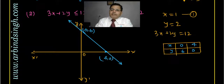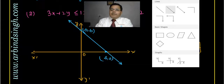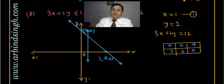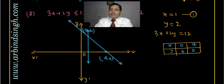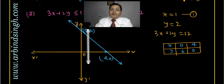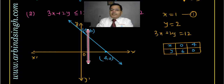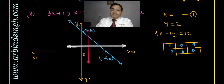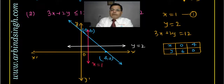The line x = 1 is parallel to the y-axis — we plot this line as x = 1. The third line is y = 2, which is parallel to the x-axis. So we now have three lines plotted: x = 1, y = 2, and 3x + 2y = 12.